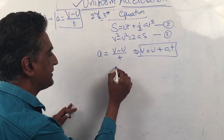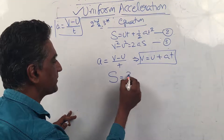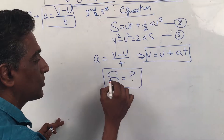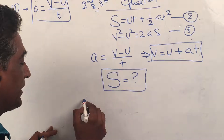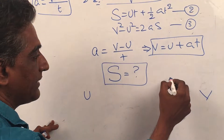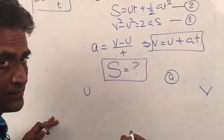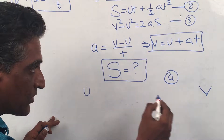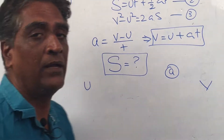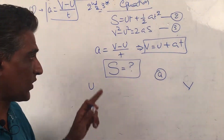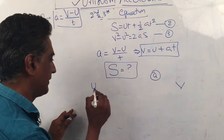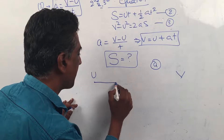Now my question to you: what is s? Here s means displacement, not distance. When the initial velocity is u, the final velocity is v, and the acceleration is a — what is the equation for s?